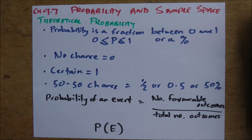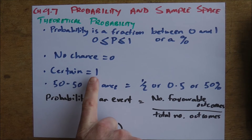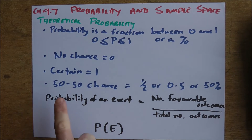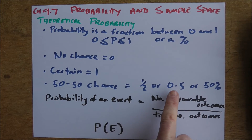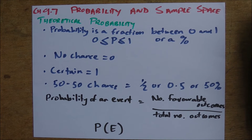If there's something that has no chance of happening, we say it has a probability of zero, or zero percent — often referred to as an impossible event, or having Buckley's chance, meaning you've got no chance at all. If something is certain to occur, we say it has a probability of one, or 100 percent — such as the sun coming up tomorrow. Something with a 50-50 chance is a half, 0.5, or 50 percent.